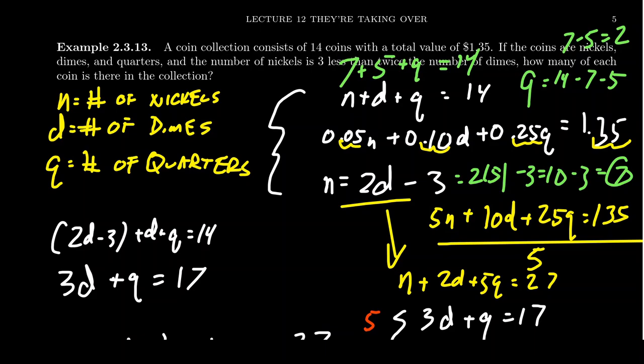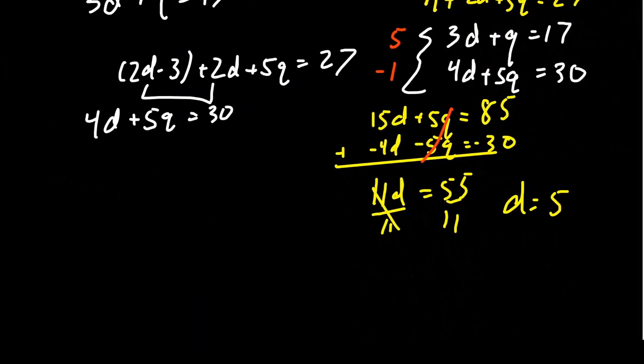And so therefore, that's how many nickels, dimes, and quarters we have inside of the piggy bank. Susie has 7 nickels, 5 dimes, and 2 quarters in her piggy bank.